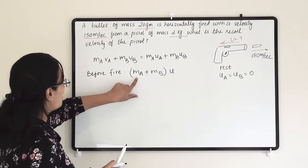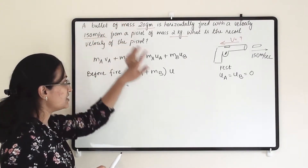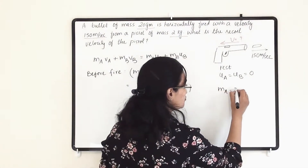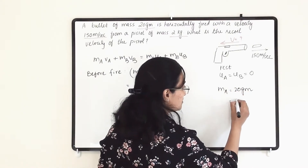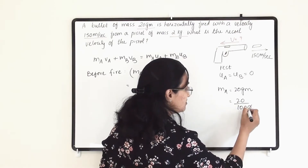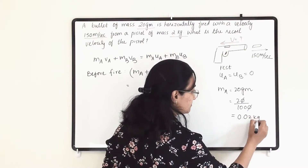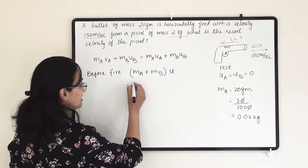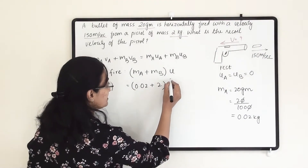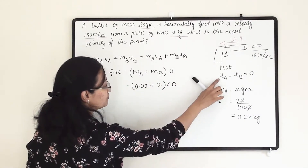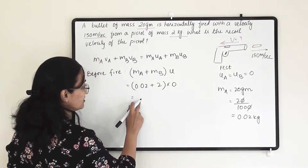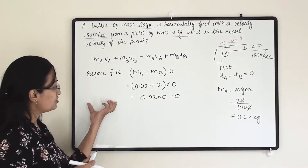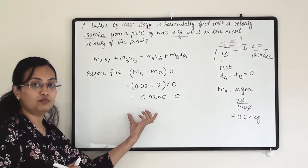Mass of bullet MA is 20 gram. We need mass in kg, so 20 divided by 1000 gives 0.02 kg. Pistol mass MB is 2 kg — that unit is already proper. So we write (0.02 + 2) × U = 0, because both are at resting position. Therefore the initial momentum before fire is 0.